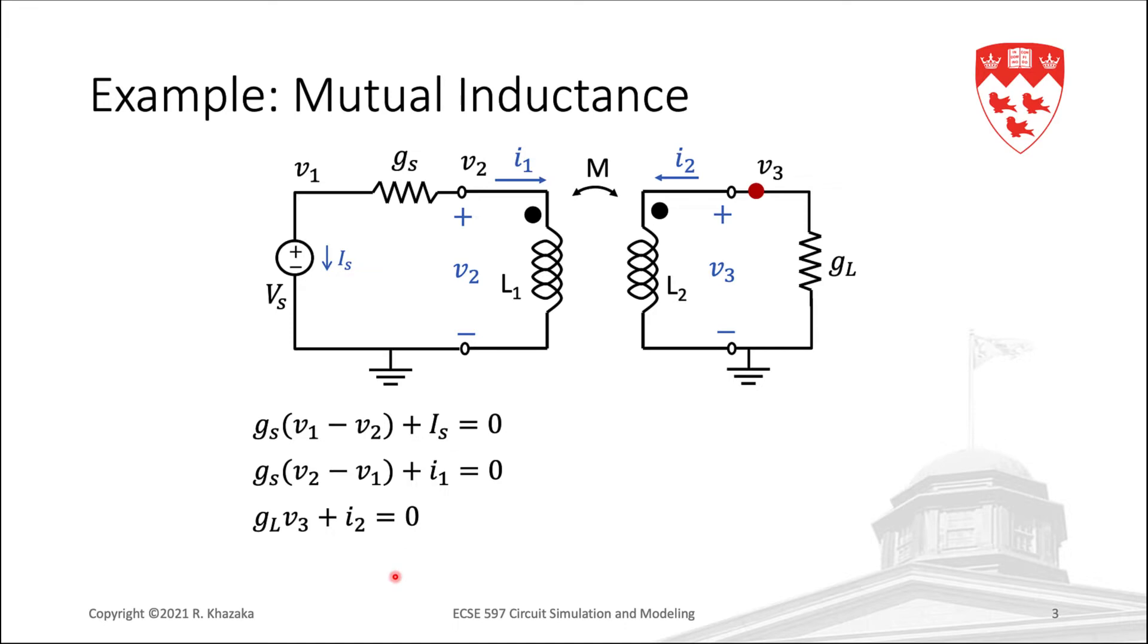So, we have three nodes, and therefore three KCL equations. But we have six variables, because we added IS, I1, and I2 as additional variables. So, we need three additional equations.